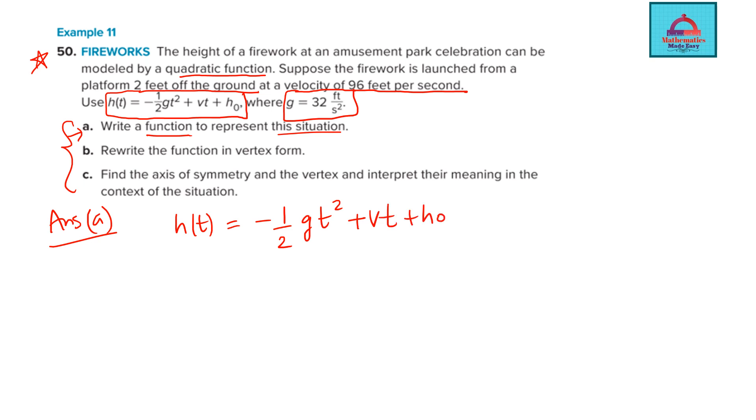This is given. Now, in this expression, in this function for h(t), there are different variables: g, t, v, h naught.